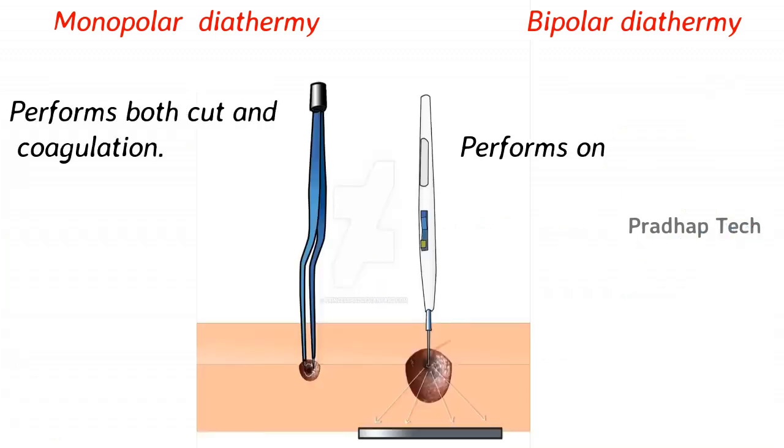Monopolar diathermy performs both cut and coagulation, but bipolar performs only coagulation.